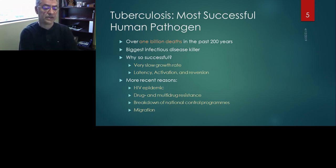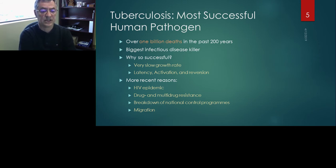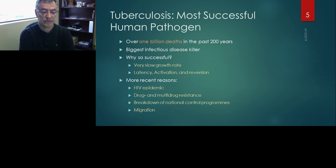There are some very good reasons why this is the most successful human pathogen. The first is its slow growth rate. This bacteria grows slowly, and as a result it makes the patient ill slowly and kills the host very slowly. For a pathogen that travels through the air, if it kills the host rapidly, it also loses the ability to infect other hosts. So it's actually an advantage for this pathogen to slowly kill the host.